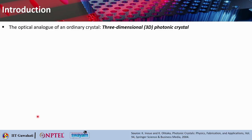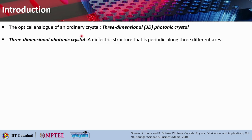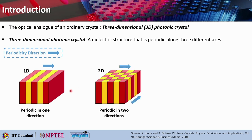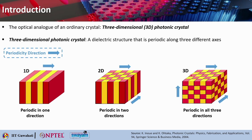To introduce this topic: we have already discussed 1D and 2D Photonic Crystals. A 3D Photonic Crystal is basically the optical analog of ordinary crystals, since ordinary crystals also exist in three-dimensional space. A three-dimensional photonic crystal is a dielectric structure where the refractive index modulation happens in all three axes or all three dimensions — it is periodic in all three directions.